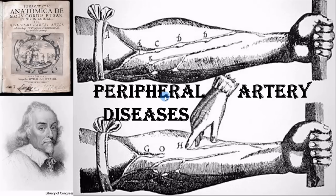Let's pick up where we left off. We were just about to talk about peripheral artery diseases. This is a cool picture — I included it because I like the history of anatomy and physiology. This is William Harvey, and this is one of his drawings from his writings, The Anatomical Treaties on the Motion of the Heart and Blood in Animals.